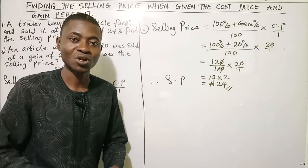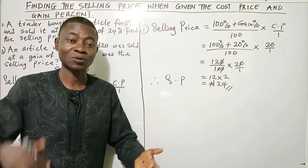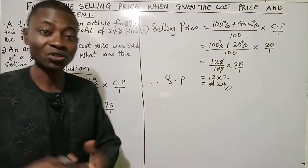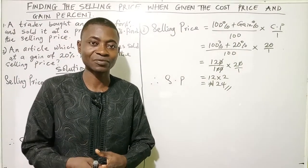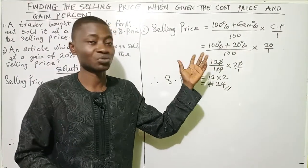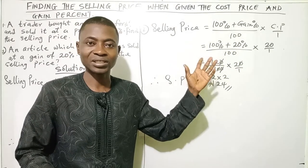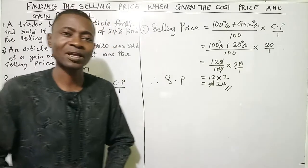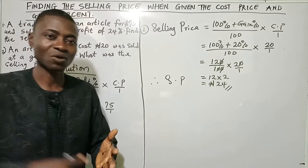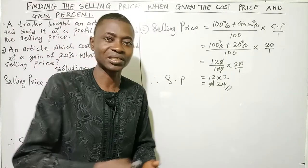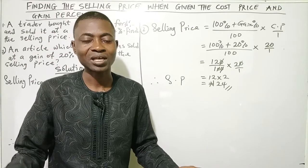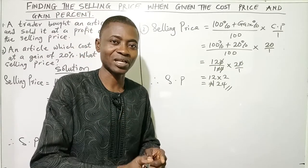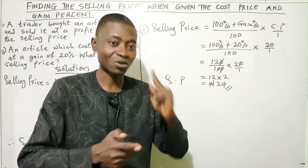So whenever you are asked to find the selling price when the cost price and the gain percent is given, this is what you are expected to do and you get your answer. Sometimes you may ask: how do I find the selling price when the cost price and the loss percent is given? Please watch out for the next video as we'll be explaining how to calculate the selling price when the cost price and the loss percent is given.